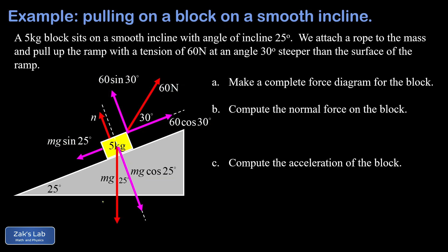So mg is 5 times 9.8, which comes out to 49 newtons. And this mg cosine of 25 would be 49 cosine 25, and to three significant digits that comes out to 44.4 newtons.